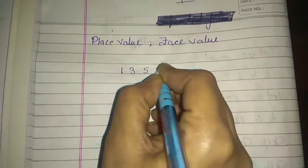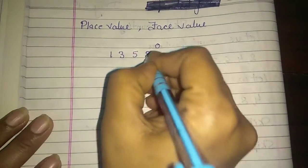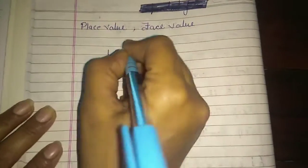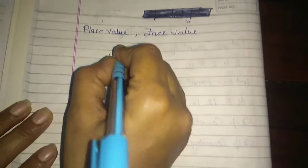One, three, five, eight, nine. Nine is in the ones place, eight is in the tens, five is in the hundreds, three is in the thousands, and one is in the ten thousands.